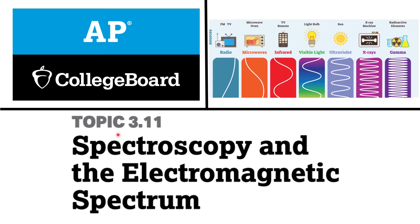Hello everyone. This is topic 3.11 Spectroscopy and the Electromagnetic Spectrum, taken from AP Chemistry College Board. In this video, I'll be telling you what is spectroscopy, what is the electromagnetic spectrum, and the relation between spectroscopy and the electromagnetic spectrum. So let's start.